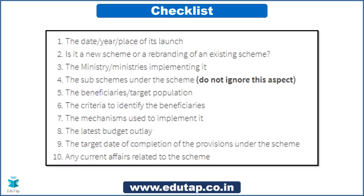Nikhil asks how many years of government schemes to study for RBI Grade B 2019. I would not say there is a specific span of years — like 10 or 20 years. You need to cover important schemes in each sector, and obviously the current and trending schemes are always important, plus whichever are the key schemes in various sectors.